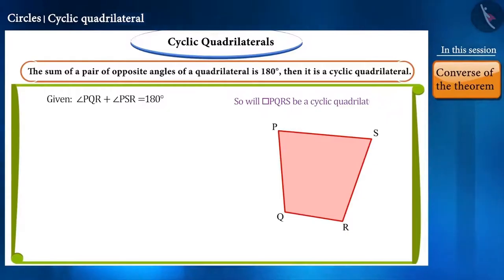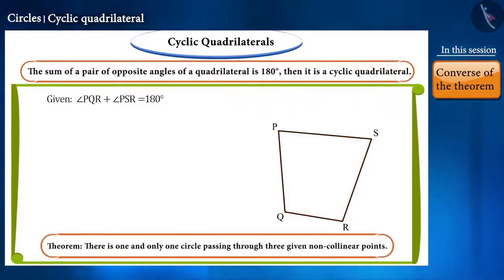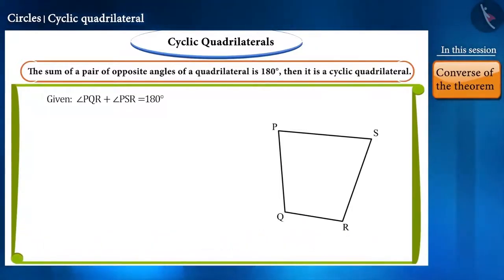Come, let's see. Friends, we know that we can draw one circle passing through three non-collinear points. We make a similar construction here, drawing a circle that passes through the points P, Q, and R.